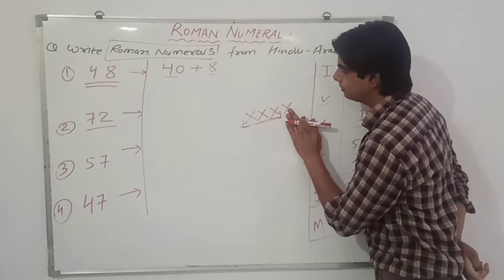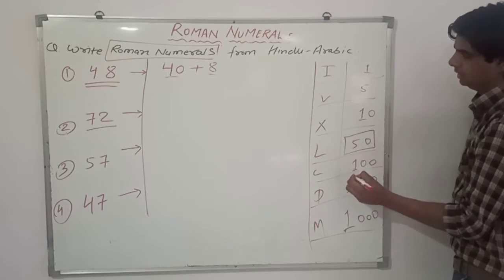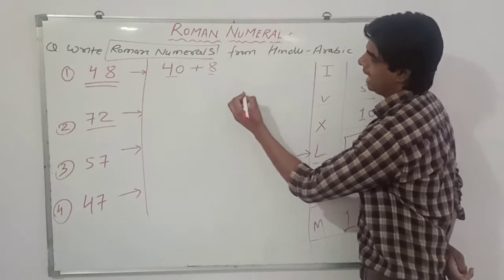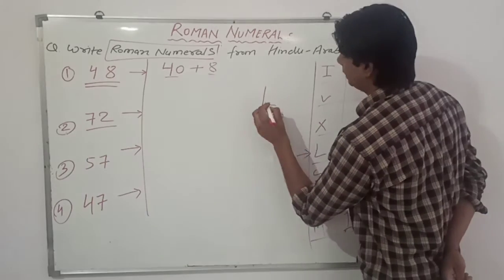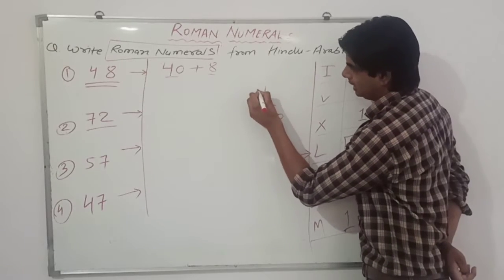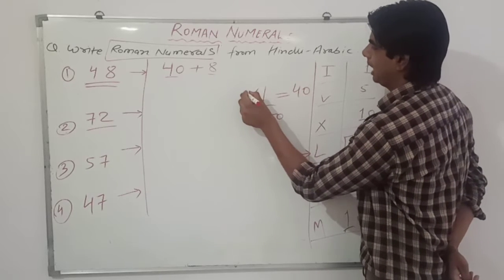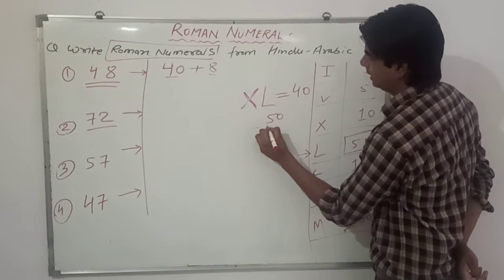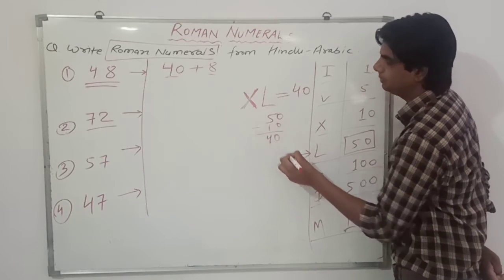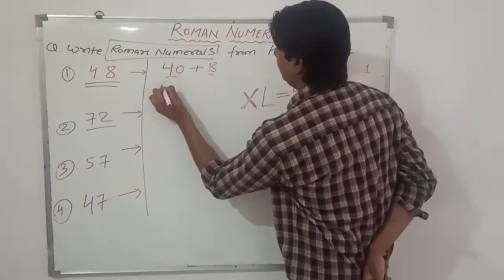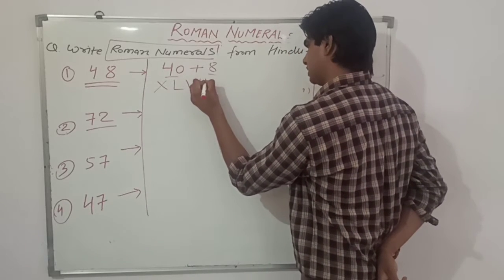It is a rule that you cannot repeat a symbol more than three times. So for writing 40, we use 50 which is L. To make 40, we subtract 10 from 50. We do this by writing X to the left of L, so it becomes XL which equals 40. A smaller symbol written to the left gets subtracted. Now we write 8 as V, VI, VII, VIII. So 48 is written as XLVIII.